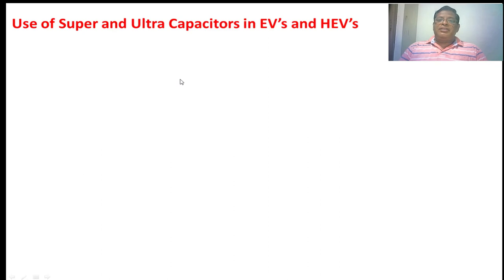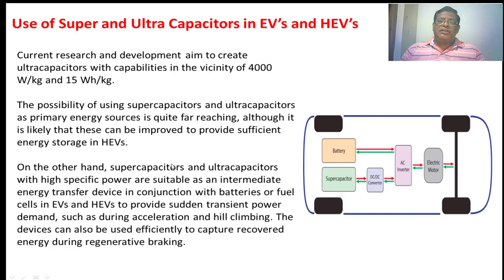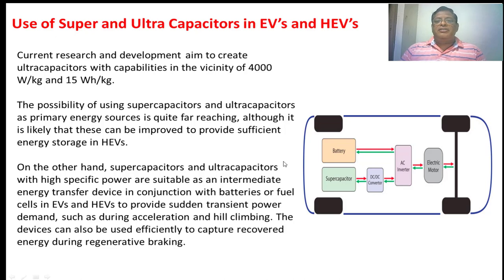Even though the energy density of supercapacitors and ultracapacitors is increased when compared to conventional capacitors, we are not able to use these capacitors as a primary source for electric vehicles. Current research and development is aimed at creating an ultracapacitor in the area of 4000 watts per kg and 15 watt hour per kg. We can use the supercapacitor and ultracapacitor due to high power density during the acceleration of the vehicle. When the vehicle is accelerating, it requires a high amount of power, and that sudden power demand can be taken from the supercapacitor and ultracapacitor.